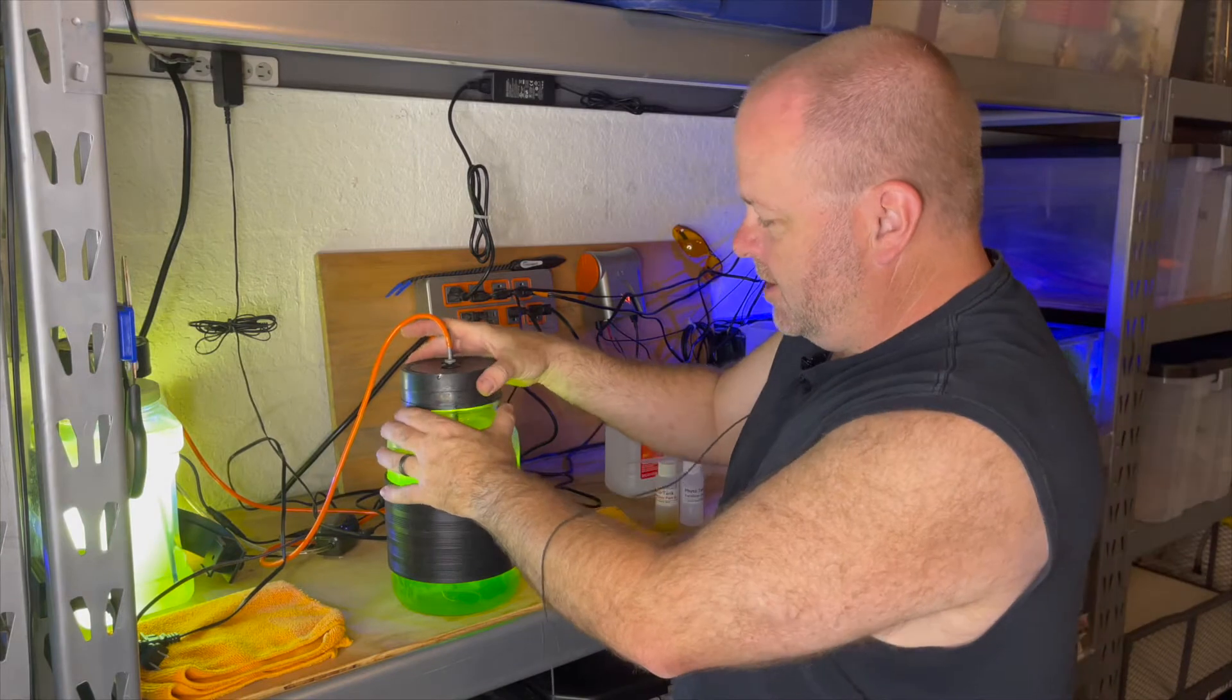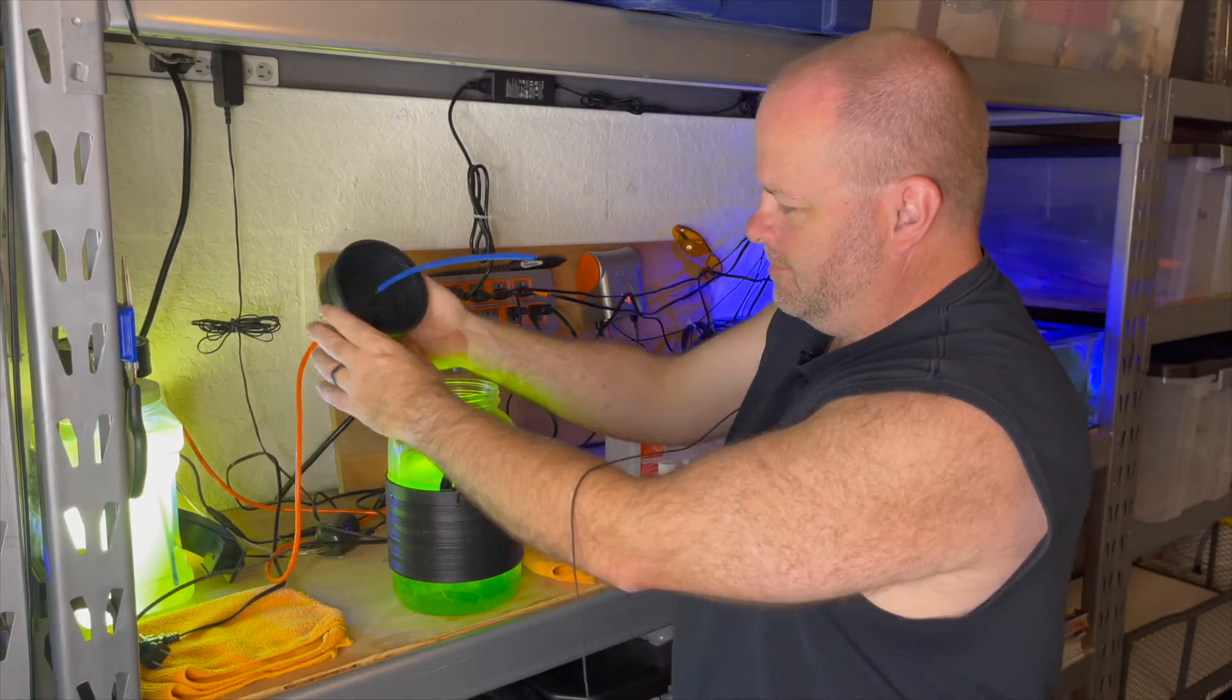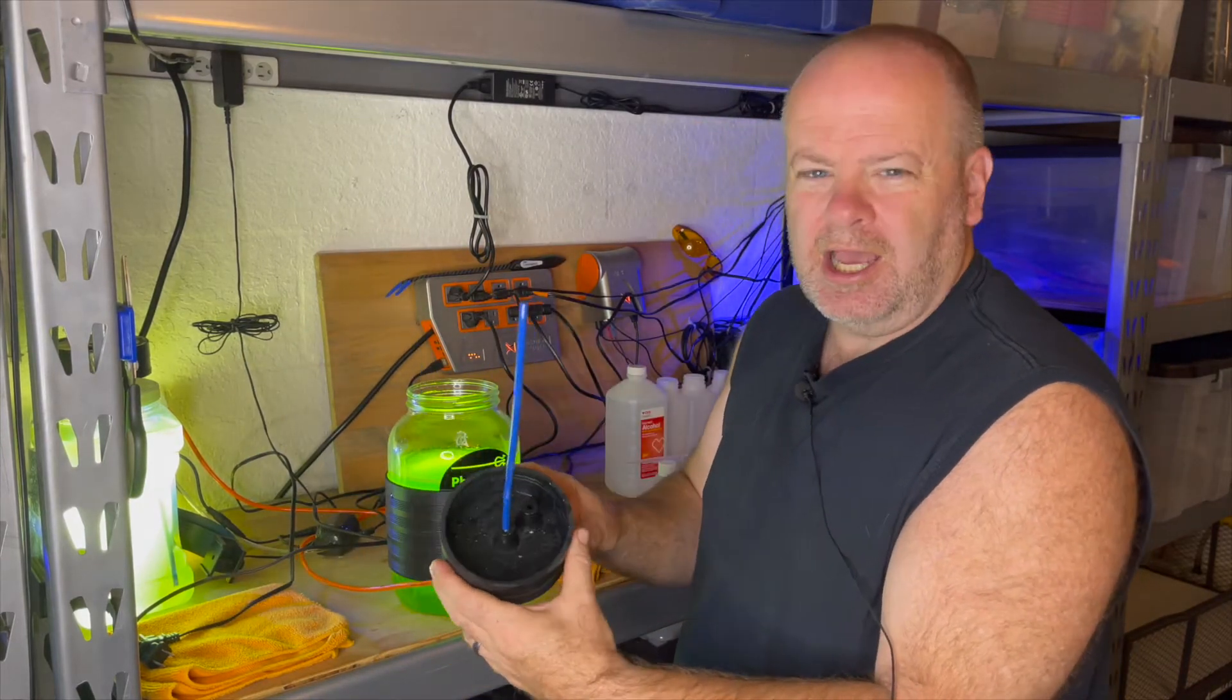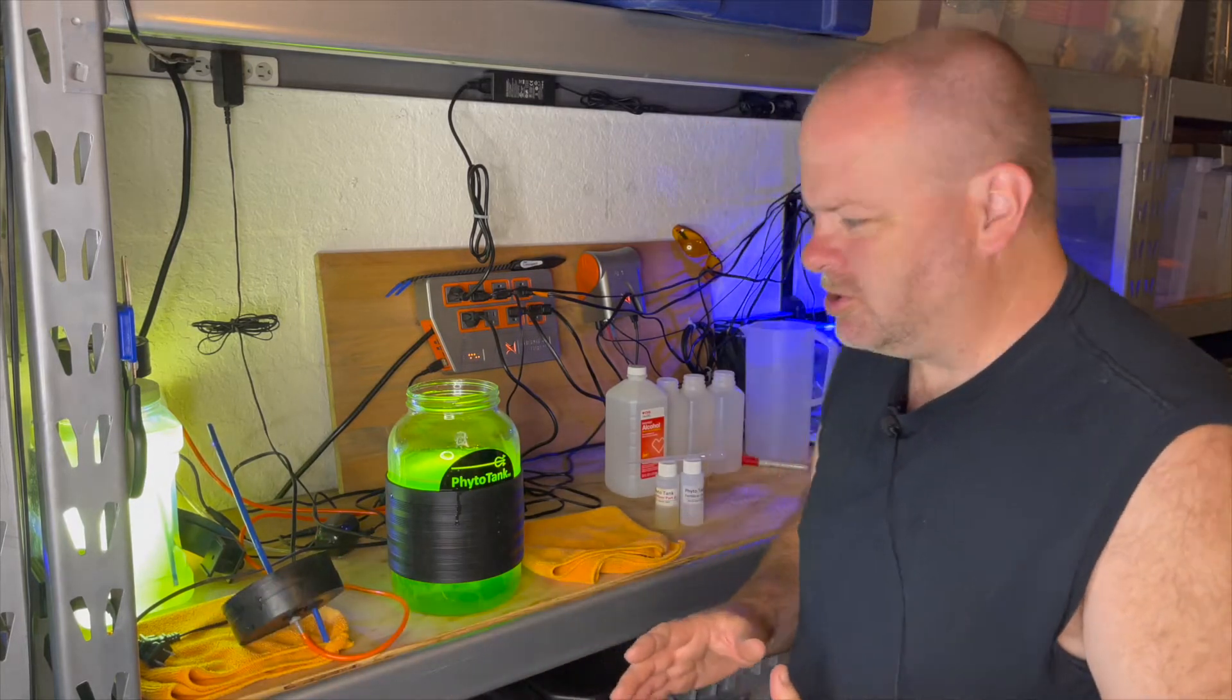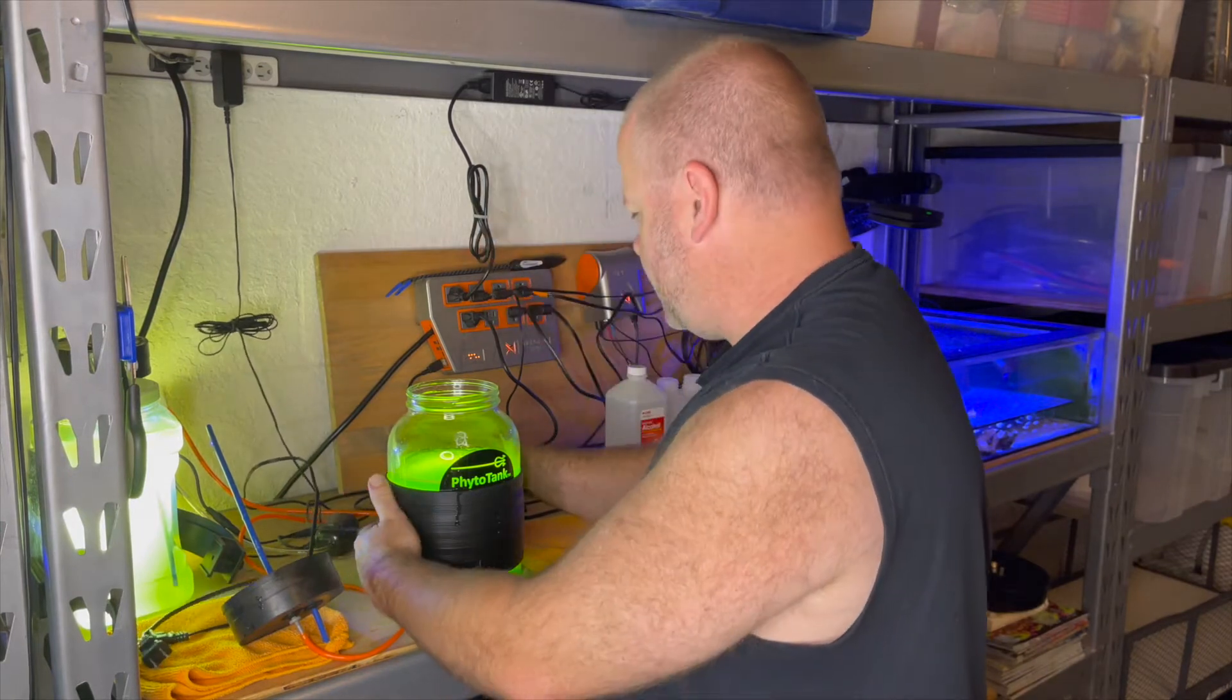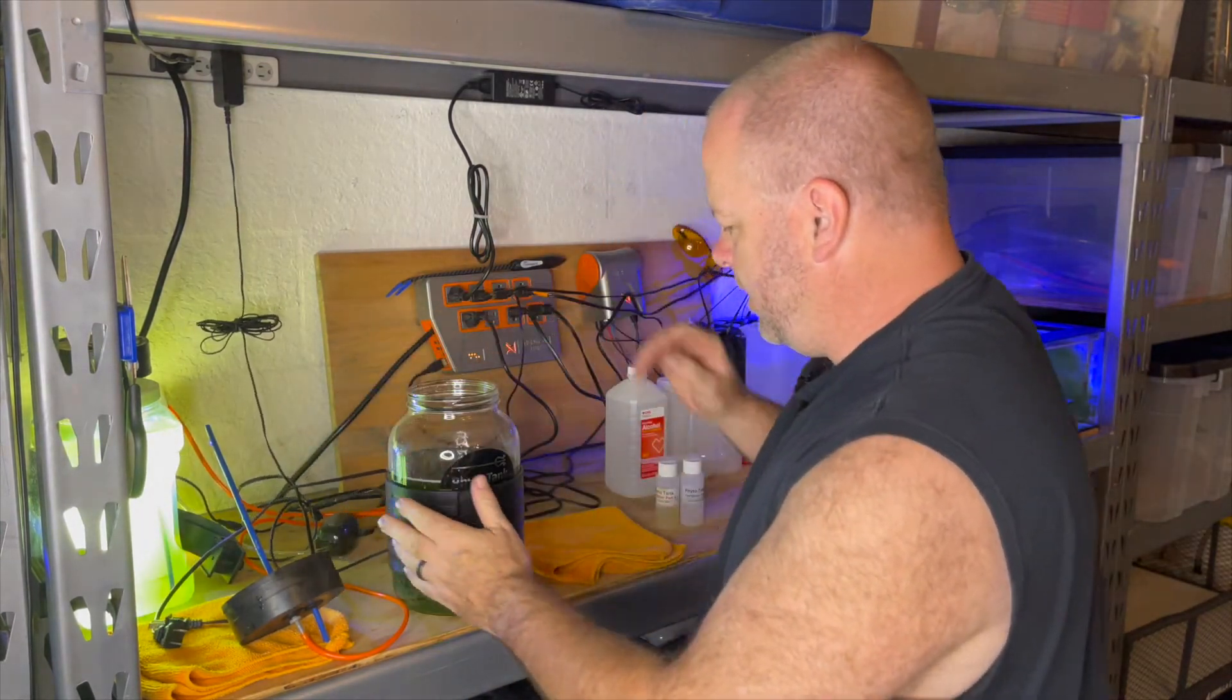What I'm simply going to do is take the top off. Now it will drip a bit. I'm going to put that to the side. Now it is suggested that you clean this each time. You use a new hose. I find that I can get away with two or three cultures before I have to do that. And I'm going to unplug this as well if I can find the correct cord.